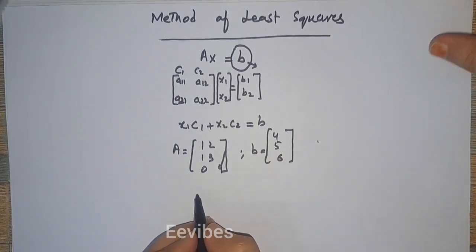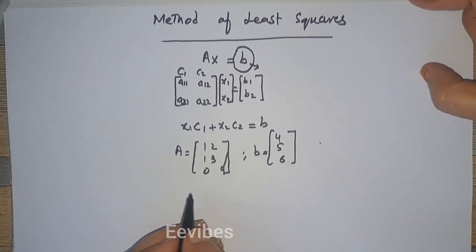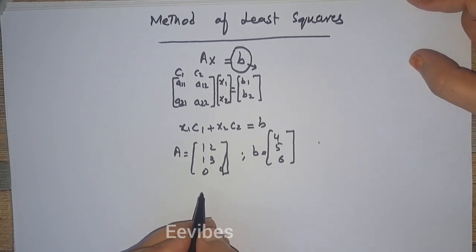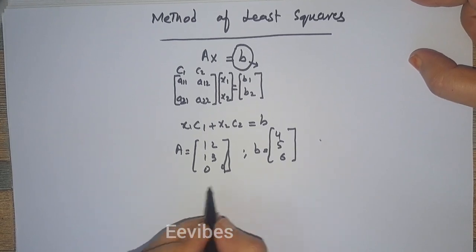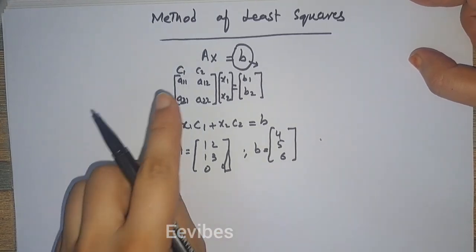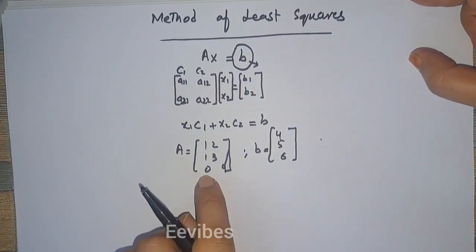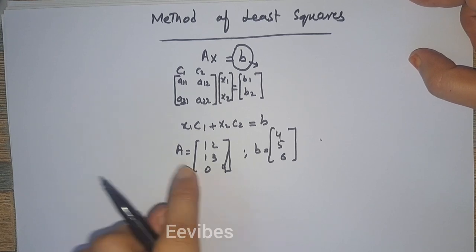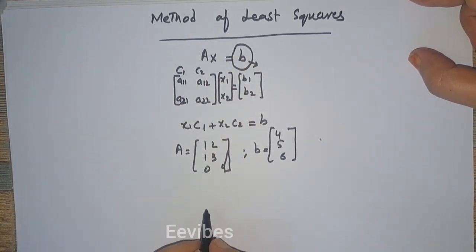In this case, this is not possible to find the solution of the system since B doesn't lie in the column space of A.